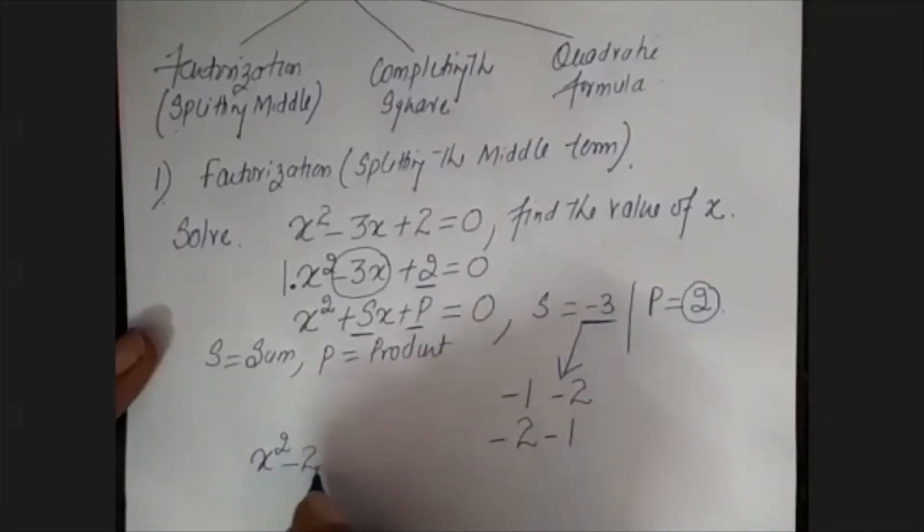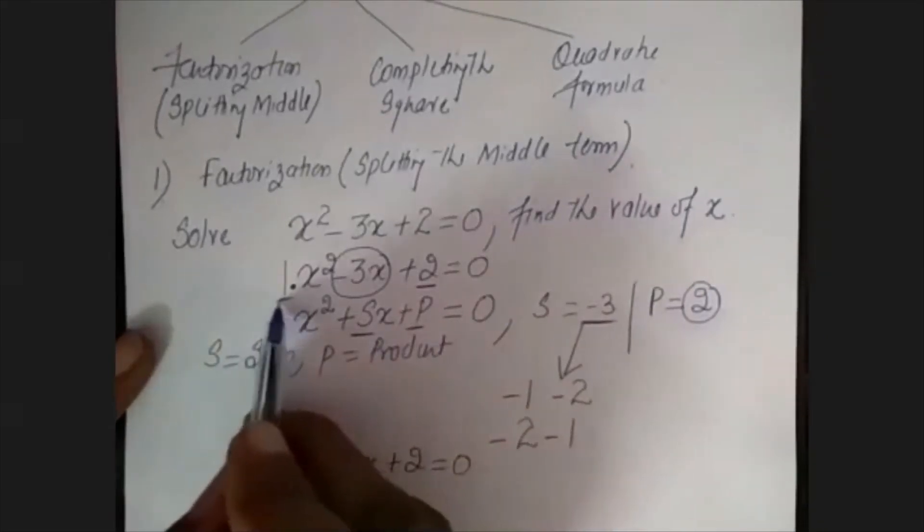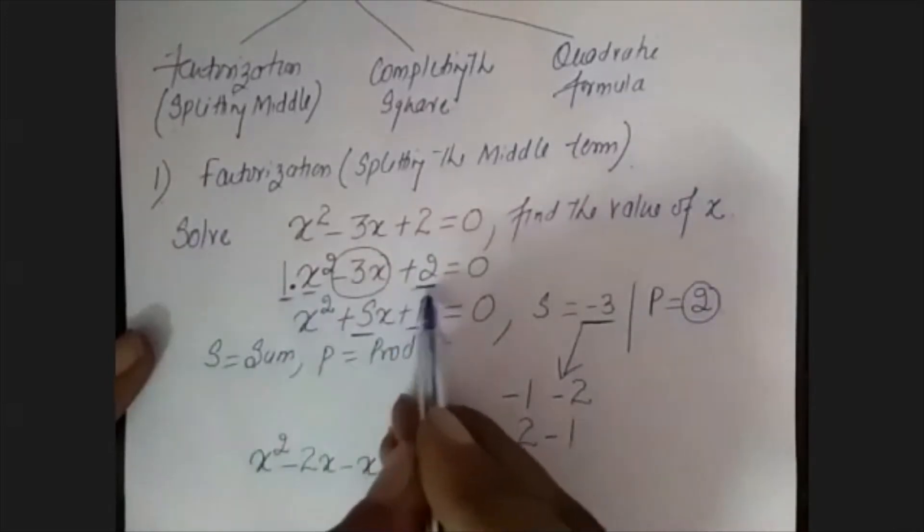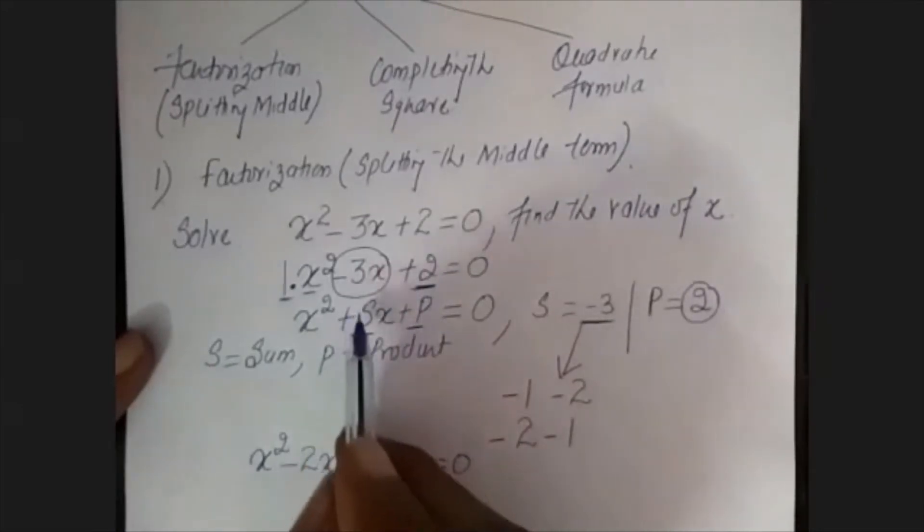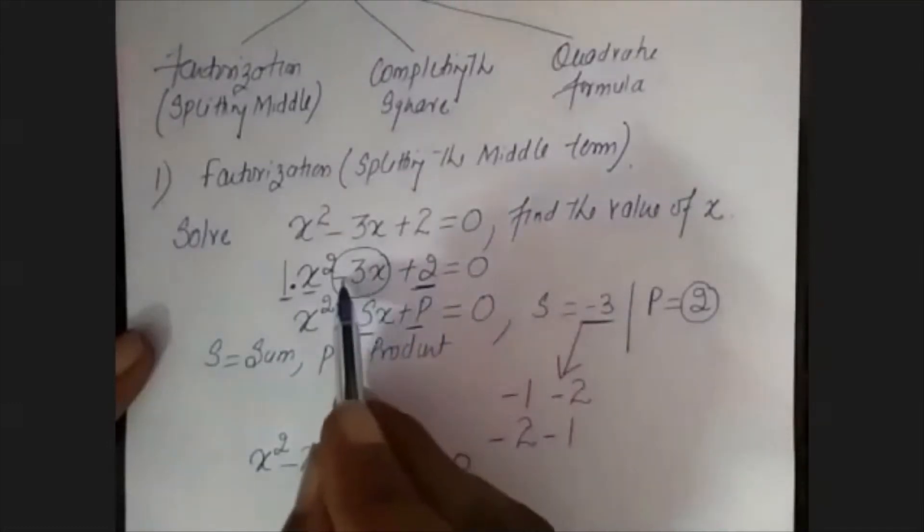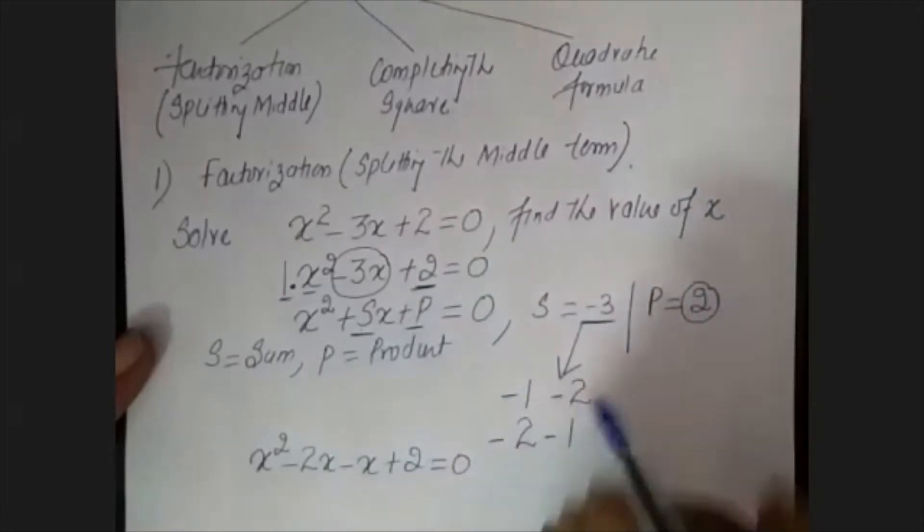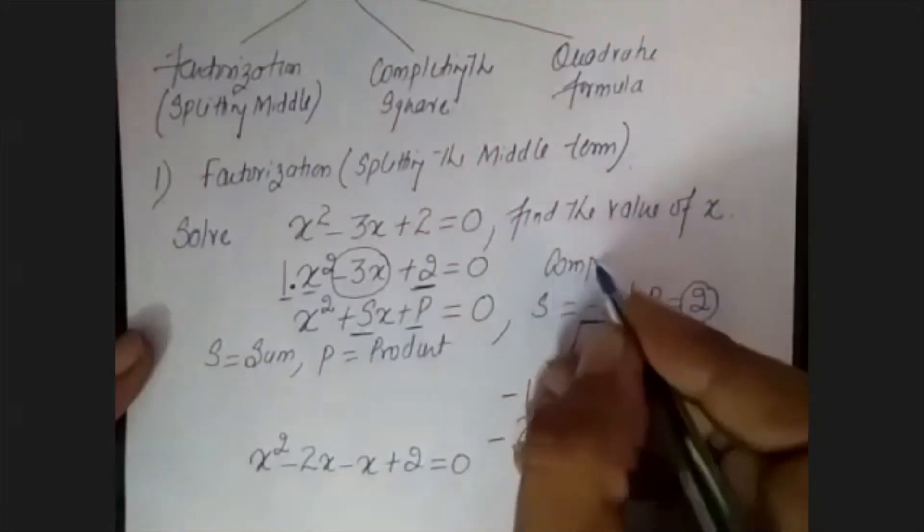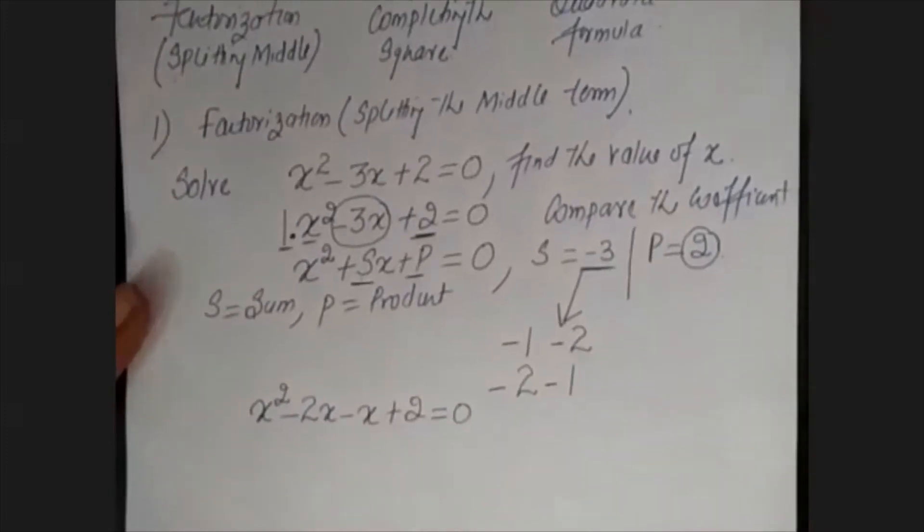Now I will substitute in my equation: x² - 2x - x + 2 = 0. So I will not change the product, I will break the sum. The product is the coefficient of x² and the constant term coefficient. If there is a sign with it, I will also take the sign. Since the sum here is minus, I have written minus. We will compare the coefficients.